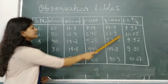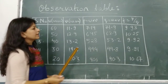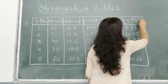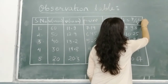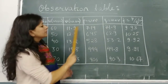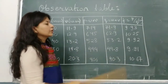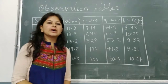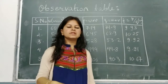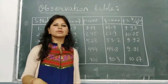Likewise, we can take the readings for all 5 observations. The unit for focal length here will be in centimeters. After you find the 5 values of the focal length, you are supposed to find the average of these 5 values, which will give you the final value of the focal length.